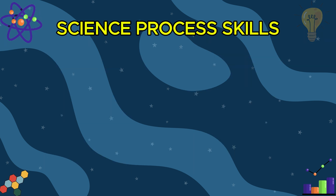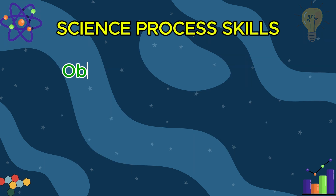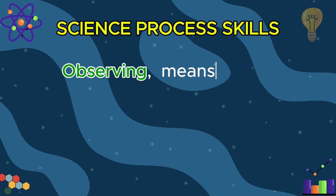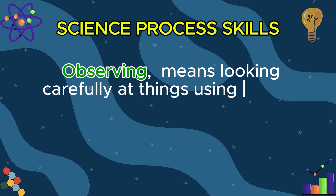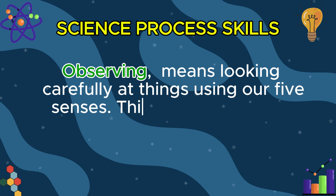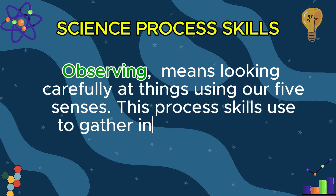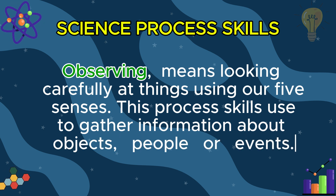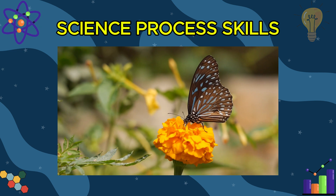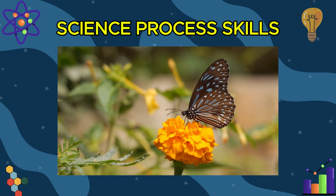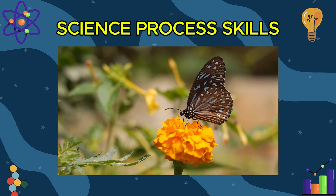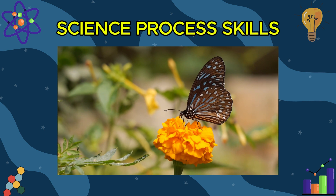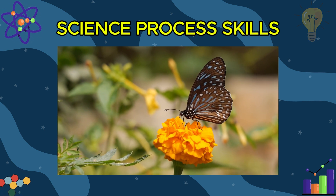Do you like observing things in your environment? Observing means looking carefully at things using our five senses. This process skill is used to gather information about objects, people, or events. For example, if you see a butterfly, you might observe its colors, patterns, and how it moves. Observing a butterfly helps you gather important information.